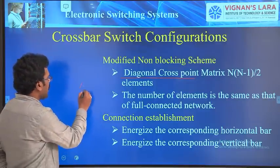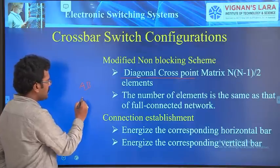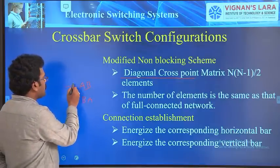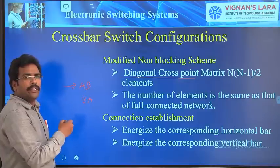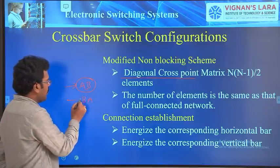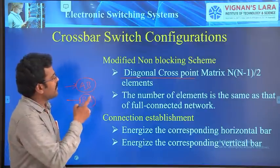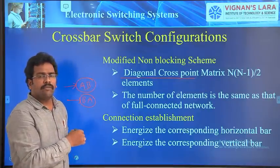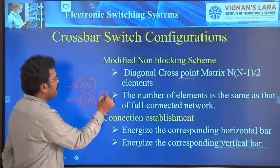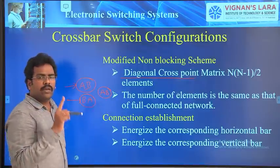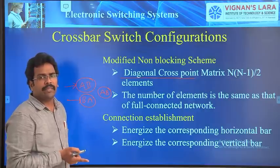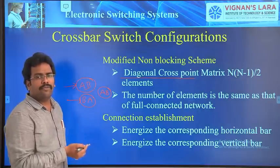In the previous case, we are using two switches — AB as well as BA — to establish the connection between A to B. Based upon the subscriber who is originating the call, it uses the appropriate switch. In case of diagonal cross-point matrix, we are going to use only one switch instead of two. So whoever may be initiating the call, it is going to use only one cross-point switch to establish a connection between A to B. In this way, we are able to reduce the number of cross-point switches.